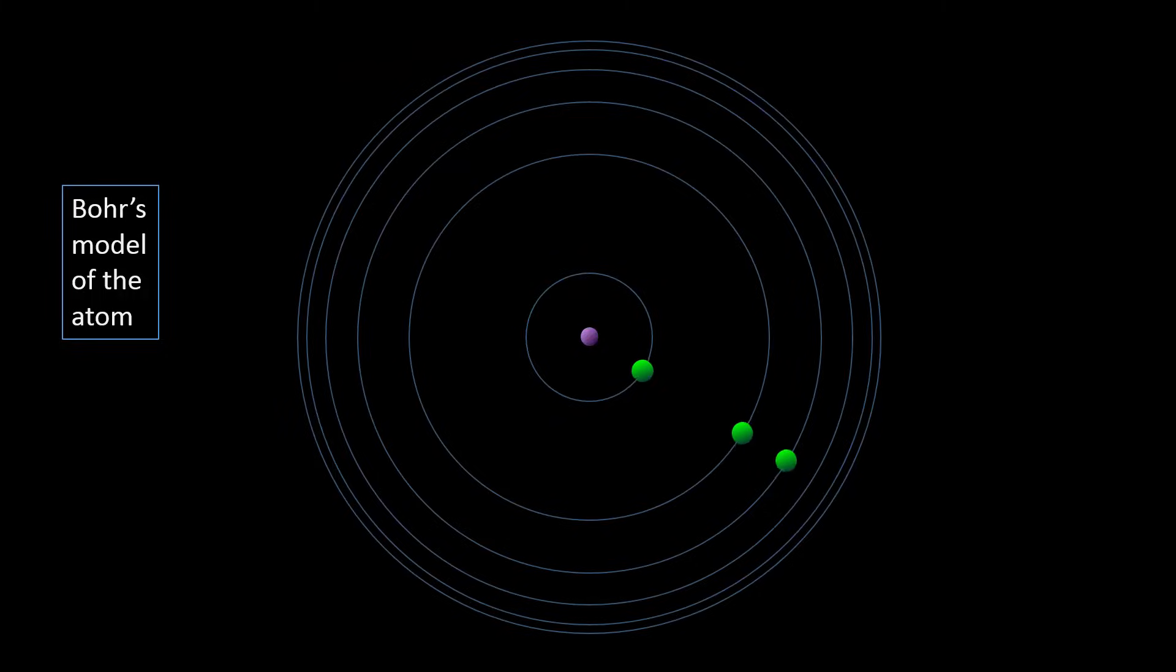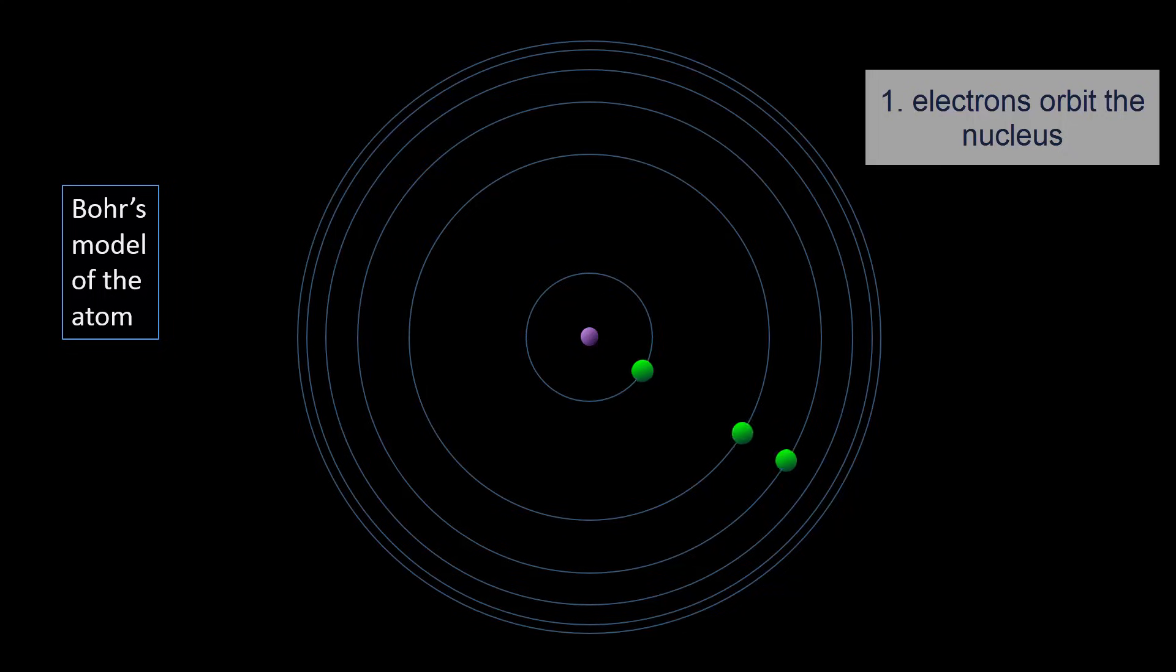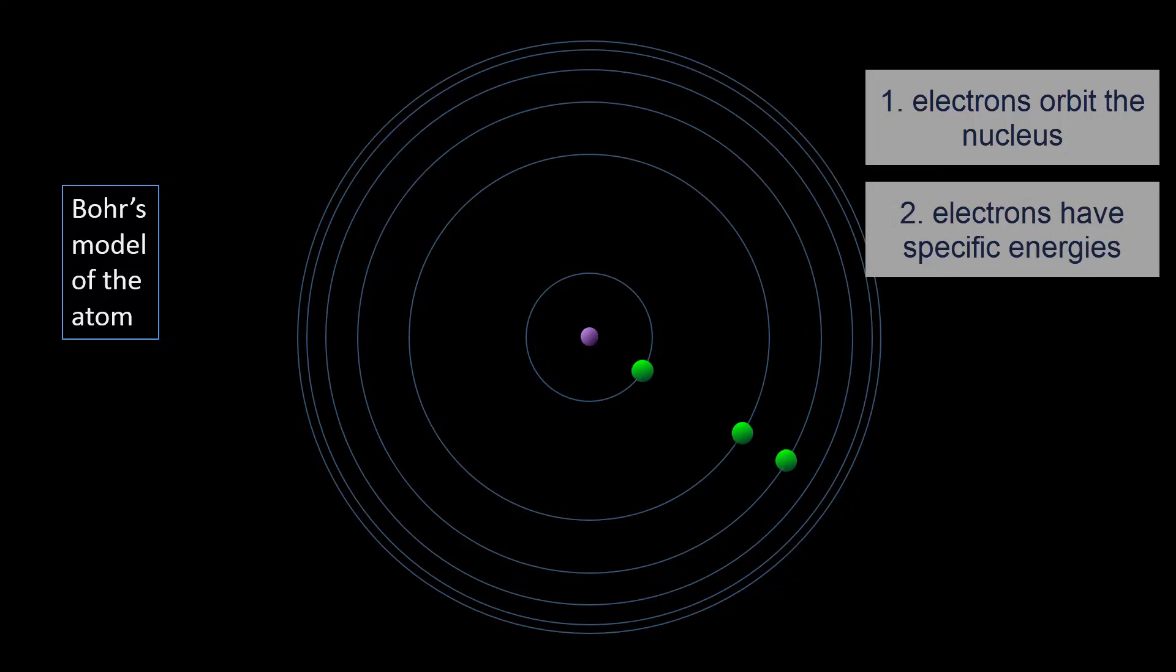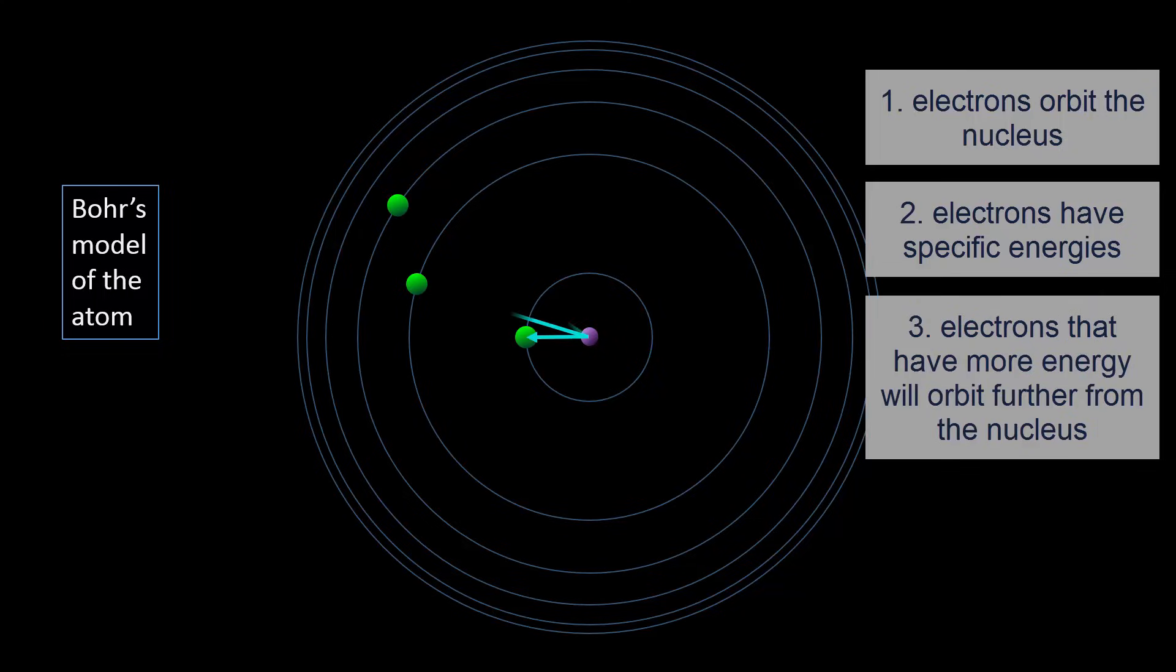In Bohr's atomic model, the electrons orbit the nucleus. The electrons have different energies, and the higher their energy, the larger the radius of the orbit.